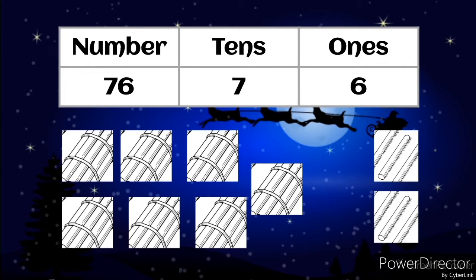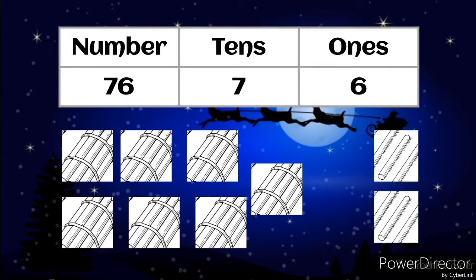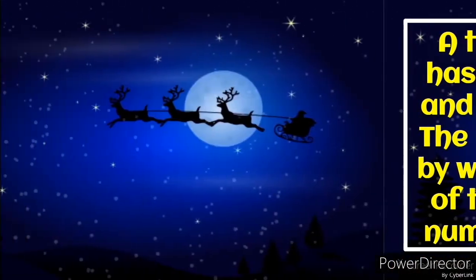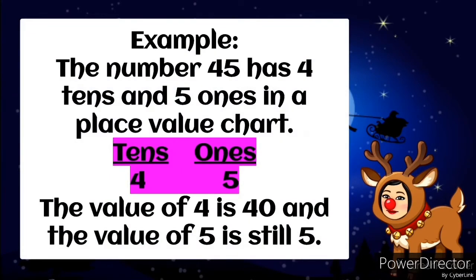We have the number 76 — tens is 7, and ones is 6. A 2-digit number has digits in the tens and ones place value. The number is written by writing the number of tens first and the number of ones next. The number 45 has 4 tens and 5 ones in a place value chart. The value of 4 is 40, and the value of 5 is still 5. You can see the tens is written first before ones.